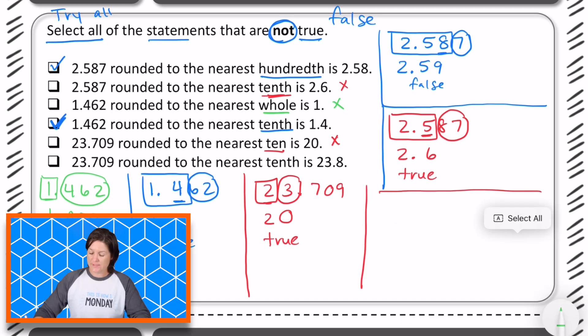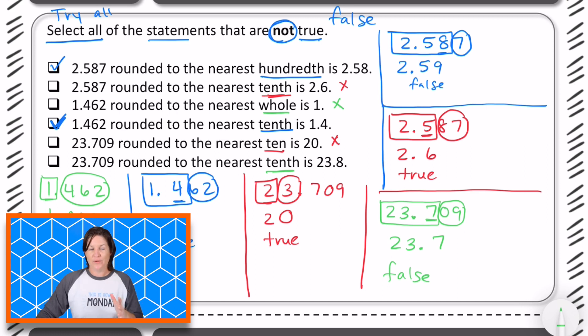All right, now for the last one, we have 23.709 thousandths again, rounded to the nearest tenth is 23.8 tenths. So the tenths place is where that digit seven is. We have 23.7 tenths, and we have nine thousandths. Halfway would be 50 thousandths, so this is less than that, which means that it would be, I'm sorry, 23.7 tenths, which is false, which again the question was looking for, finding the ones that are not true. This one is not true, so we're going to mark it. The first choice, the fourth choice, and the last choice are the correct answers there.